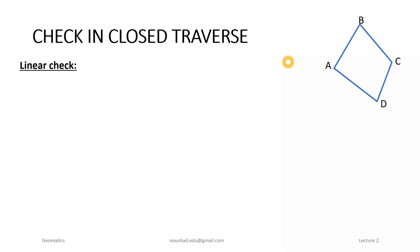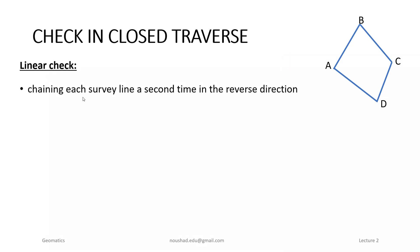We are going to check all the lengths. For linear checks, we have to chain each survey line a second time in the reverse direction. We are going to check the reverse direction — that means AD, DC, CB, and BA.